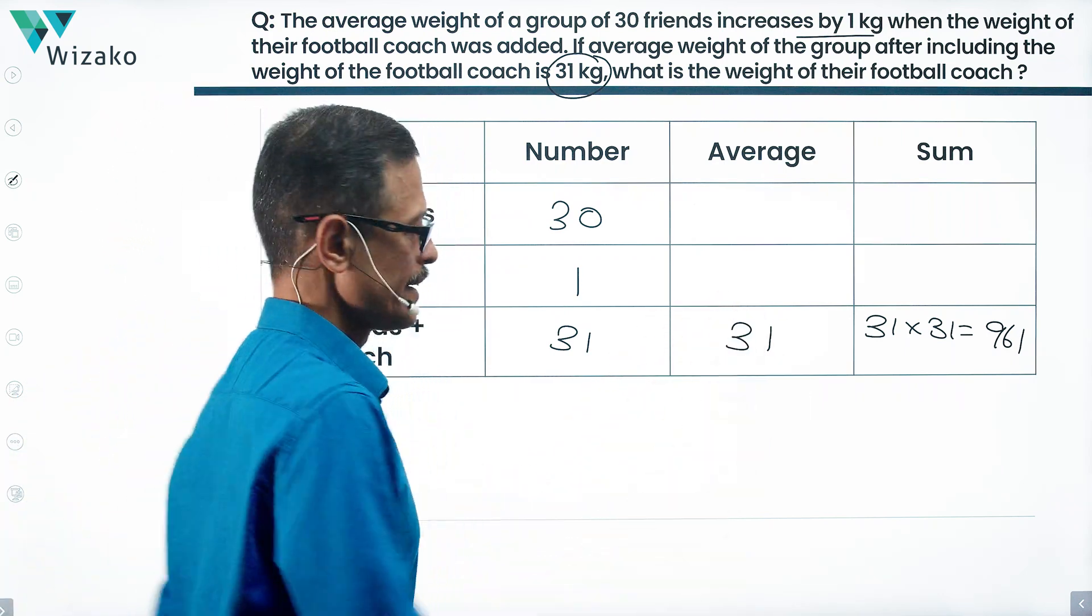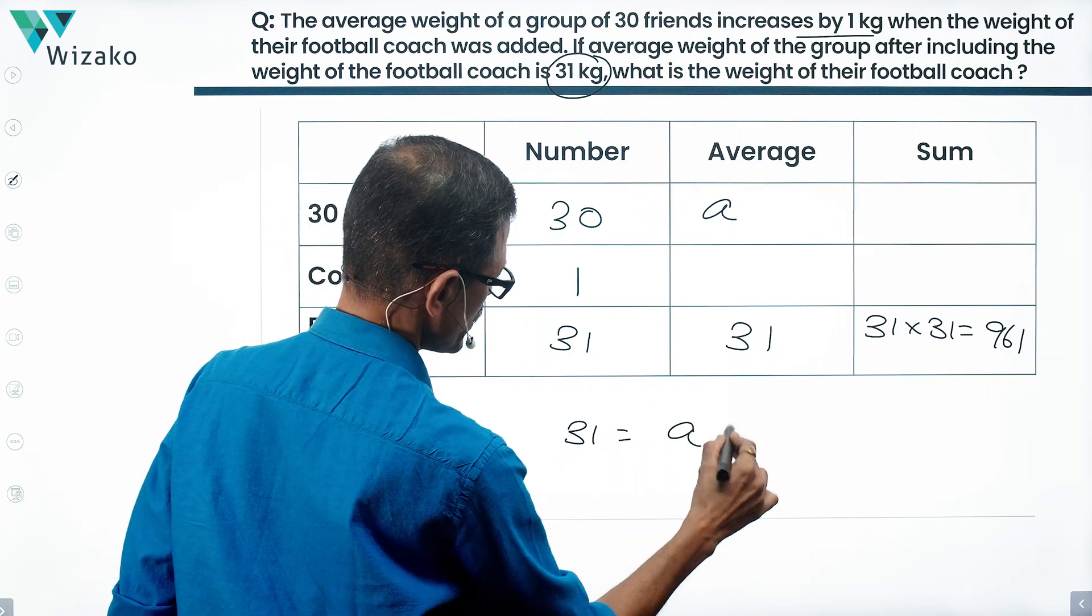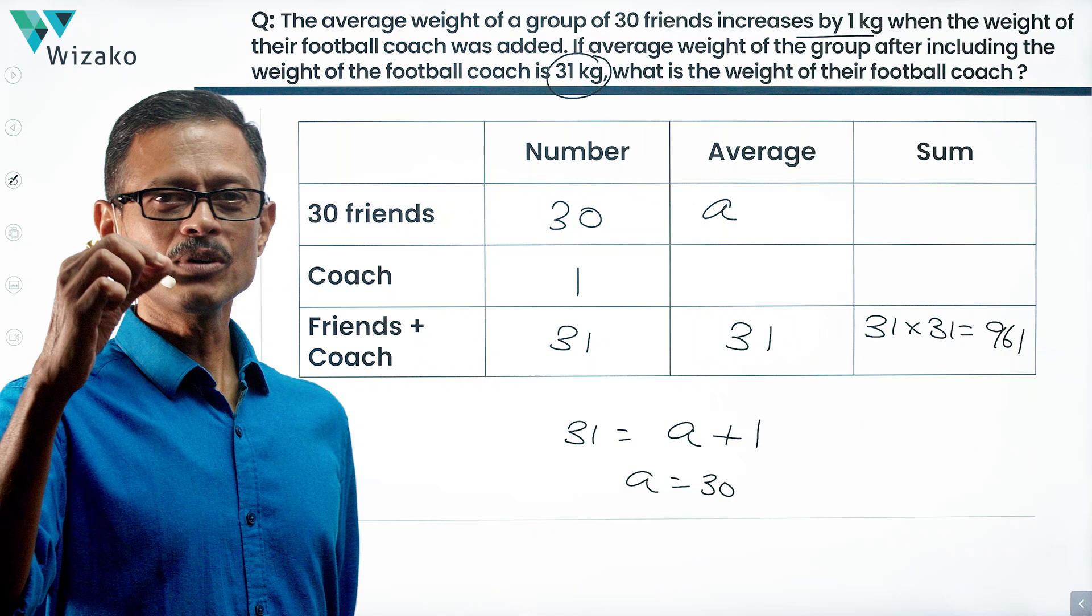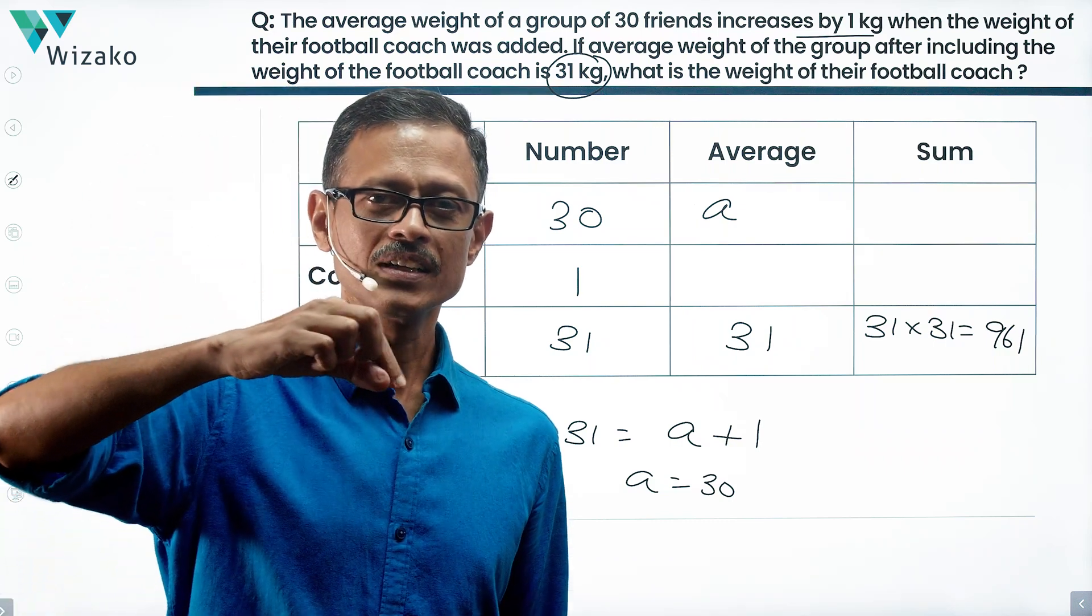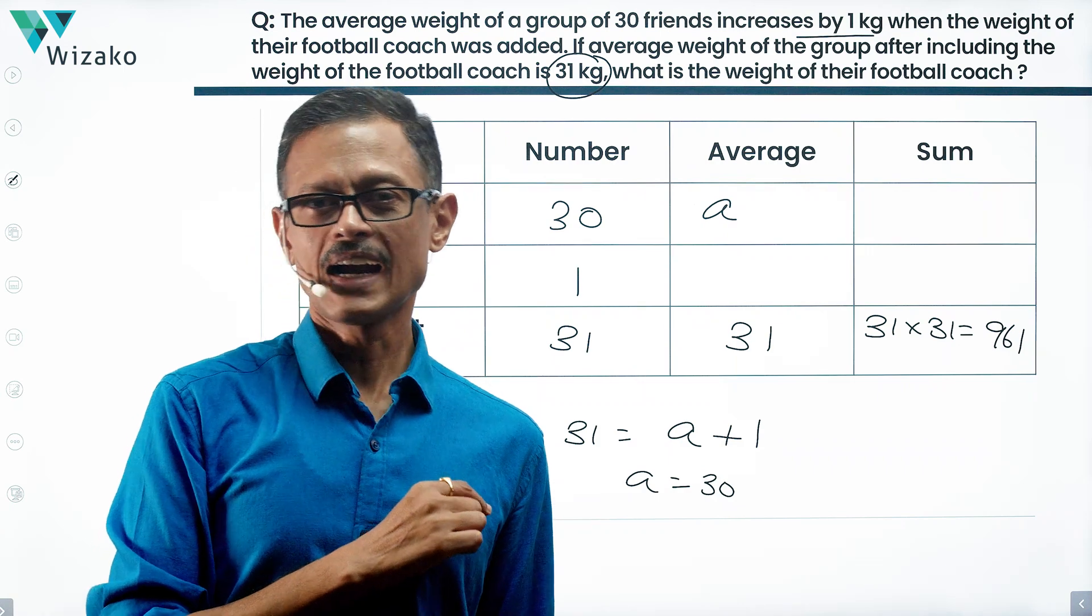So if this average is equal to A, 31 is equal to A plus 1, which means A is equal to 30. It is 31 after adding the weight of the football coach. The average went up by 1 when the football coach's weight has also been added to the group.